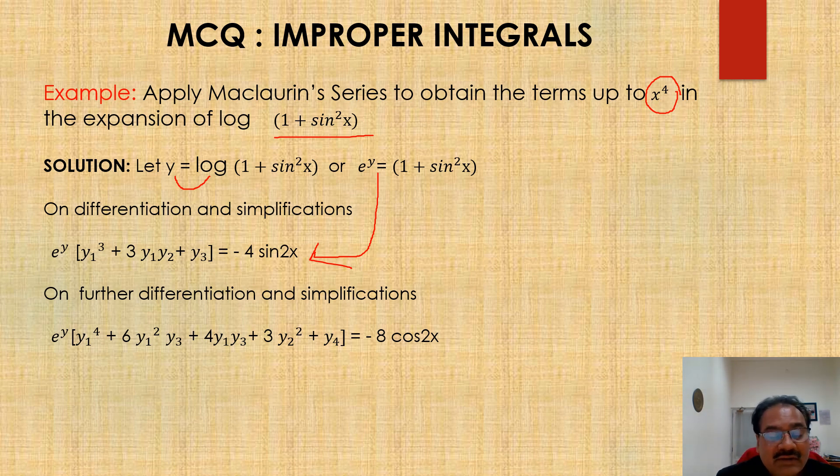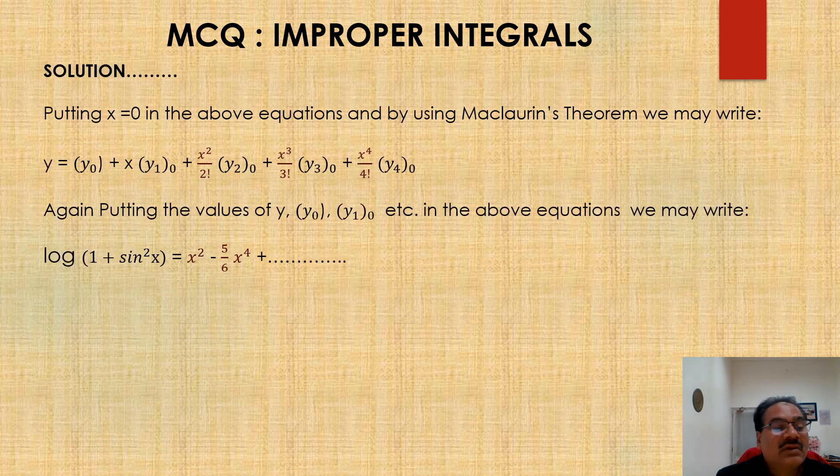So now on further differentiation and simplification, the same expression, further one order more, then you will be able to write the expression like this. e power y y1 power 4 plus 6 y1 square y2 plus 4 y1 y3 plus 3 y2 square plus y4 is equal to minus 8 cosine 2x.